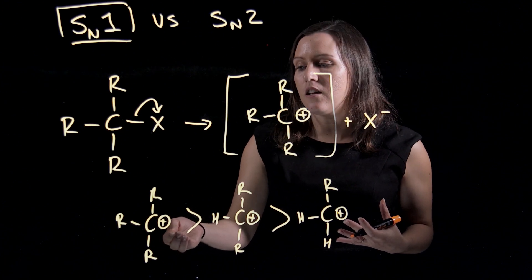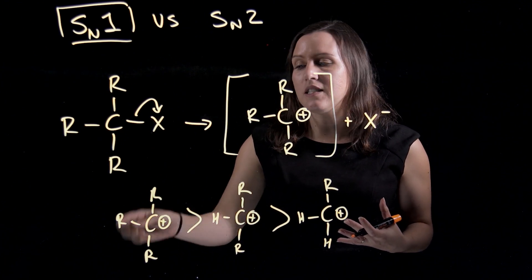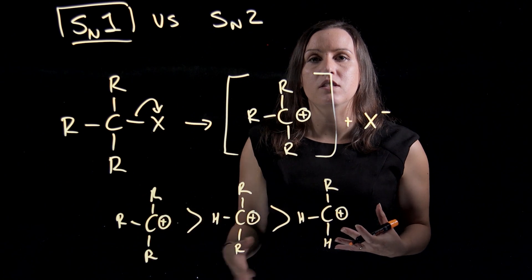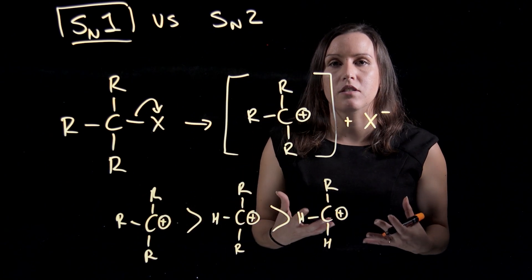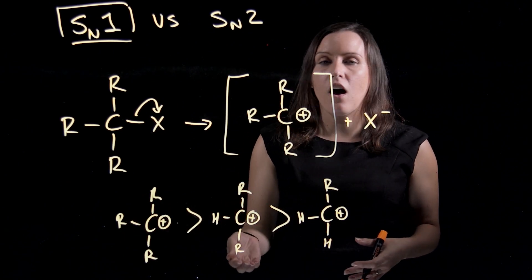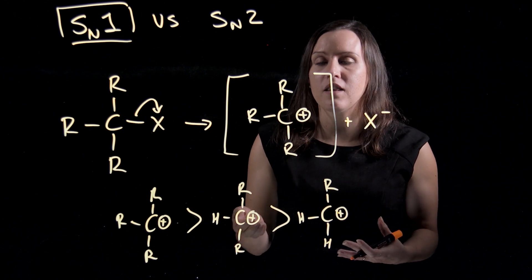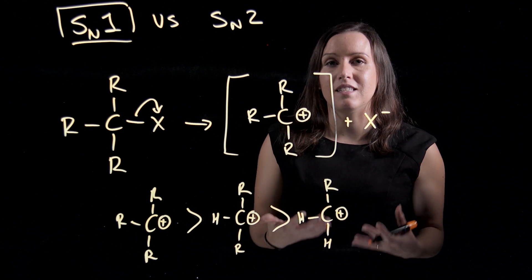So that positive charge is shared mostly on the center one, but these outer ones have an influence in helping that carbon hold that positive charge. So the less R groups or carbons that you have helping that central carbon, the less stable it is.